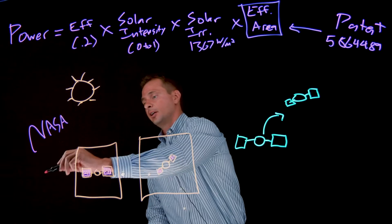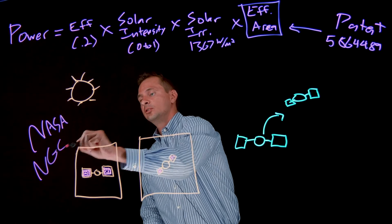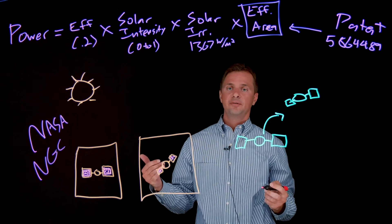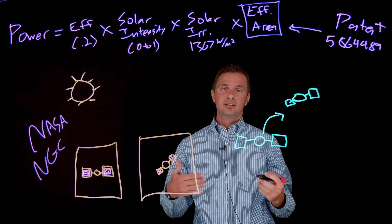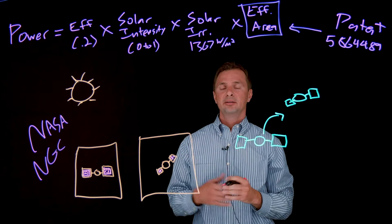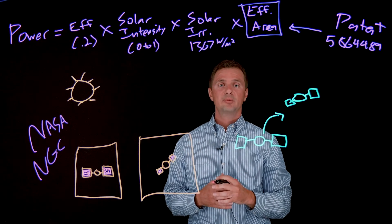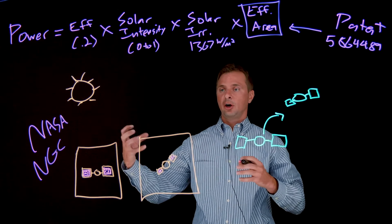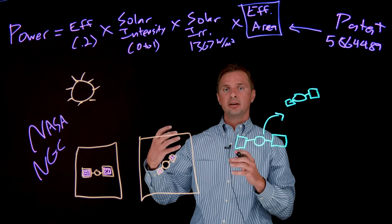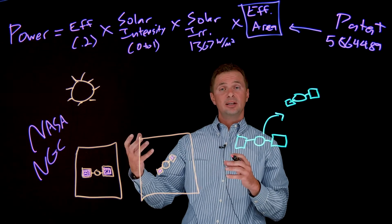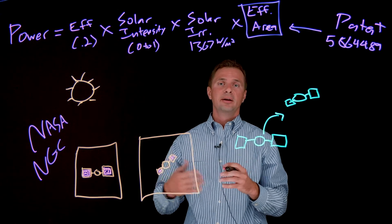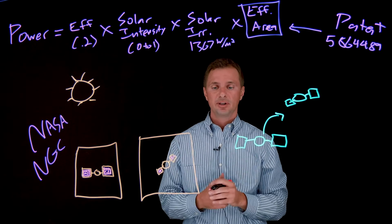But then also think of Northrop Grumman, who also uses STK, and they use it for Cygnus. So Cygnus is the resupply mission that has a cargo spacecraft go up and resupply the space station. And so as the cargo ship is in between the sun and the spacecraft and the space station, that's causing degradation in solar power collection and vice versa.